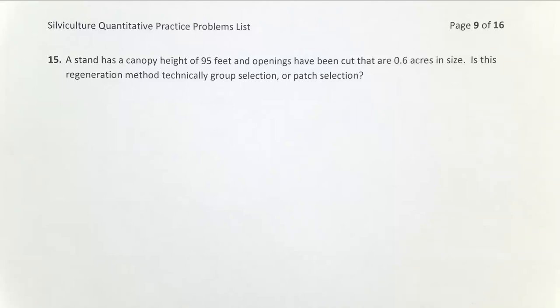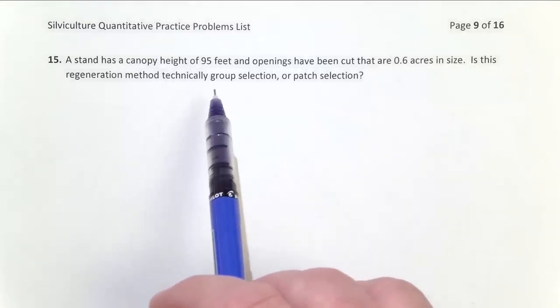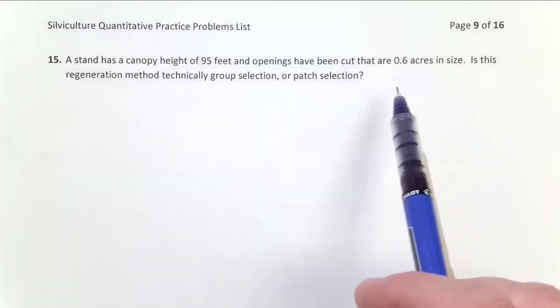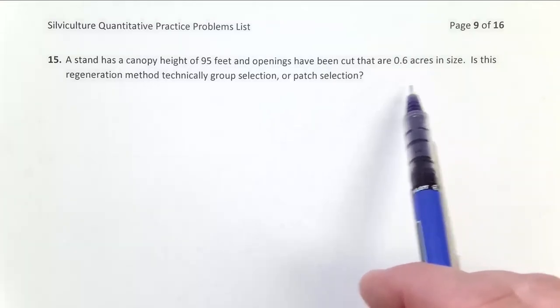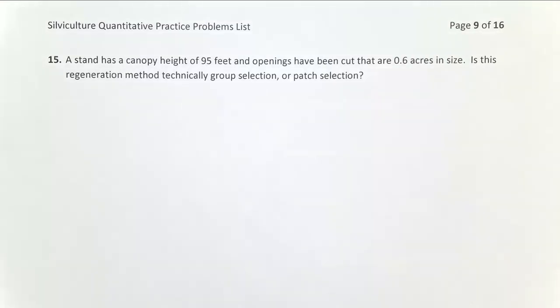So we know what we're doing here. We have our canopy height, 95 feet tall. We know that someone has come in here and made these 0.6 acre openings roughly in size. So what we want to find out now is, is this group selection or is this patch selection? So let's take a look at how we can do that.